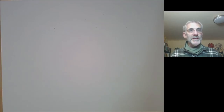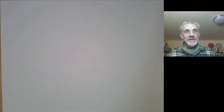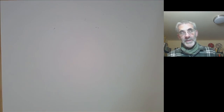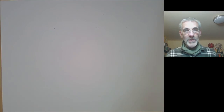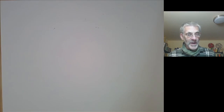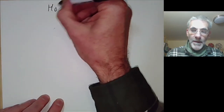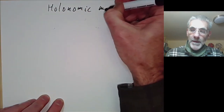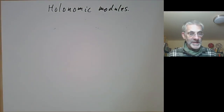This talk is the third of three lectures about the Bernstein-Sato polynomial. In the first lecture we defined the Sato-Bernstein polynomial but we didn't prove it existed. In the second lecture we defined holonomic modules over the Weyl algebra and proved Bernstein's inequality. What we're going to do this lecture is to study holonomic modules and use their properties to prove the existence of the Bernstein-Sato polynomial.